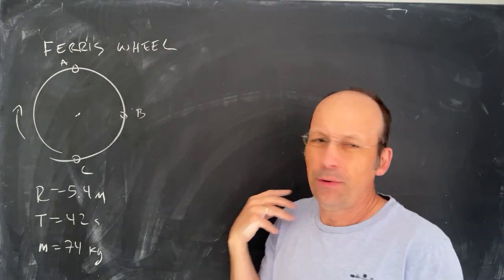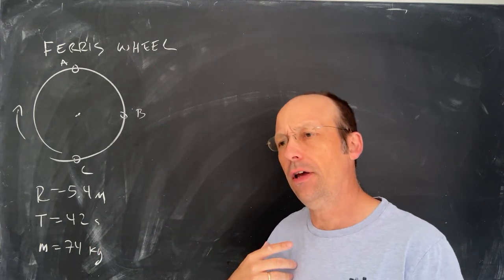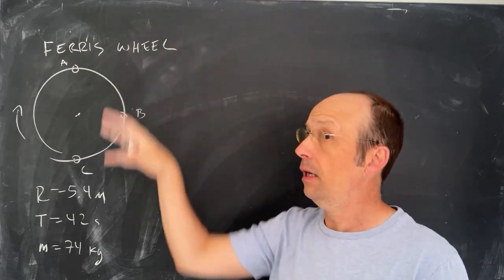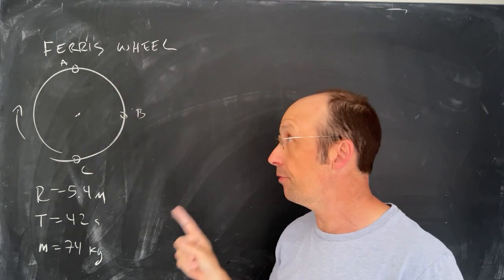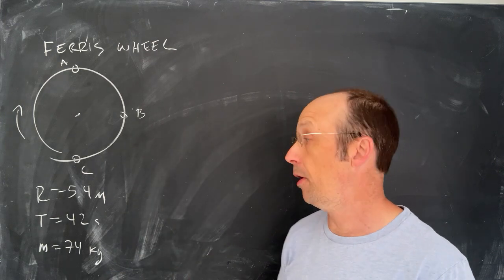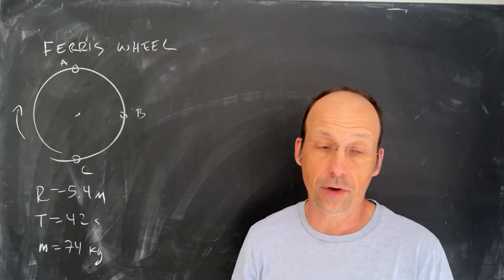Ferris wheel. I always think of Ferris Bueller, Ferris Bueller's Day Off. Great movie. But this is a Ferris wheel spinning, and I have a person at position A, B, and C, and we want to calculate their apparent weight if they have a mass of 74 kilograms.